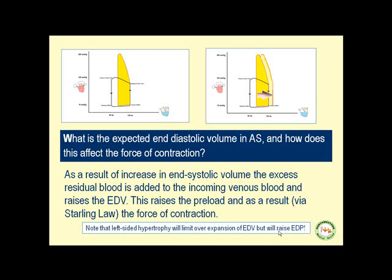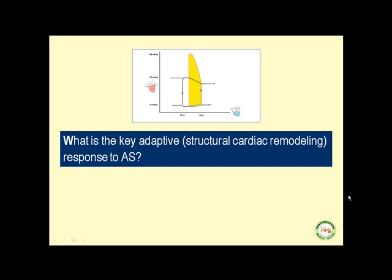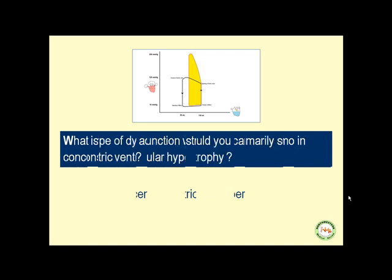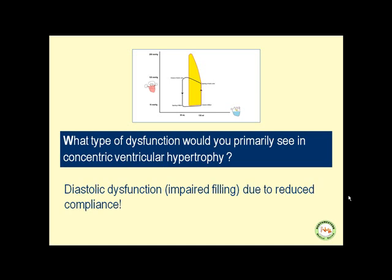The key adaptive structural cardiac remodeling change in response to aortic stenosis is concentric ventricular hypertrophy. The type of dysfunction you would primarily see in concentric ventricular hypertrophy is diastolic dysfunction — impaired filling due to reduced compliance as a result of the concentric hypertrophy.